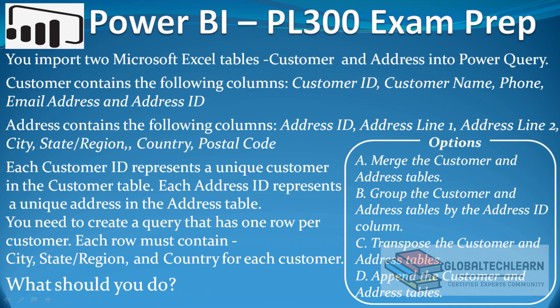The case is: you import two Microsoft Excel tables — Customer and Address — in Power Query. The Customer file contains the fields customer ID, customer name, phone, email address, and address ID. The Address table contains: address ID, address line 1, address line 2, city, state, country, and postal code. Each customer ID is a unique ID and each address ID is the unique ID. You need to create a query that has one row per customer, and each row must contain city, state, region, and country for each customer. What should you do?